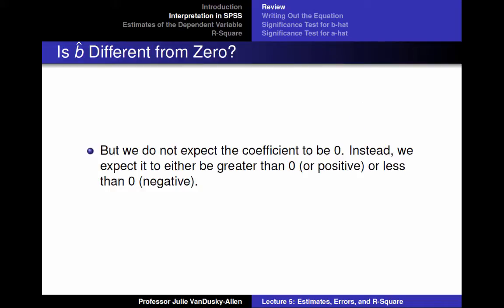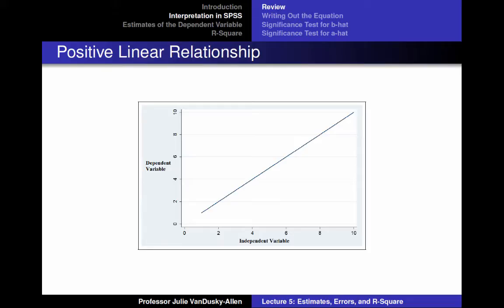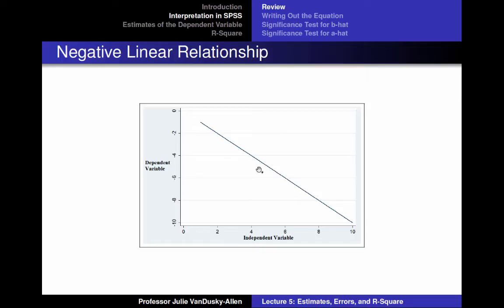However, we expect the independent variable to have an effect on the dependent variable, so we don't expect the coefficient b-hat to be zero. Based on our hypothesis, we expect it to be greater than zero or less than zero. If we expect a positive relationship, we expect that as the independent variable increases, the dependent variable increases — hence the coefficient b-hat would be positive. If we expect a negative relationship, we expect that as the independent variable increases, the dependent variable decreases — hence b-hat would be negative.